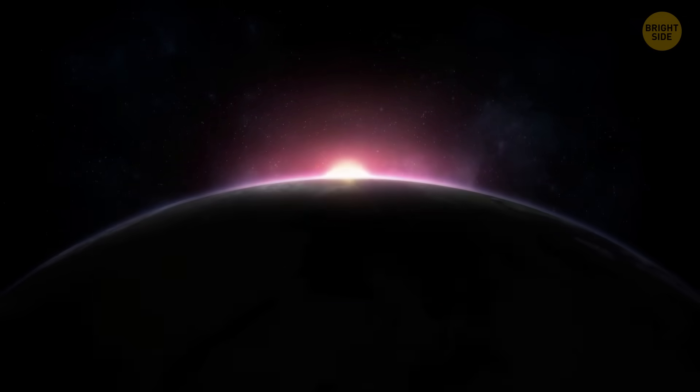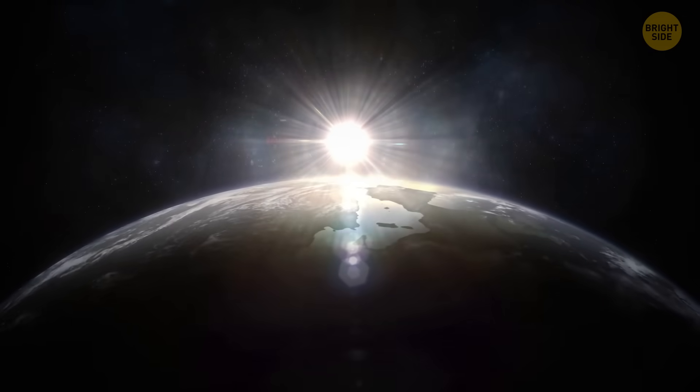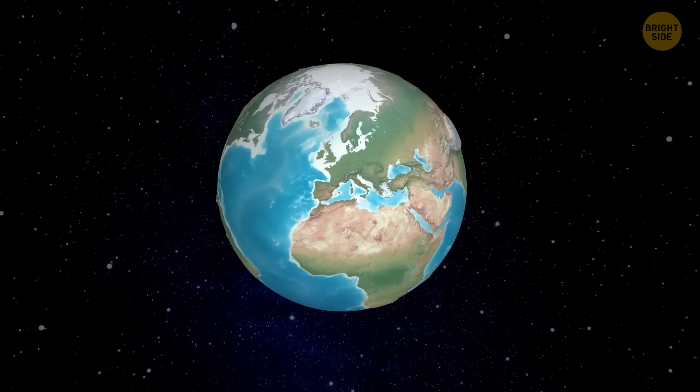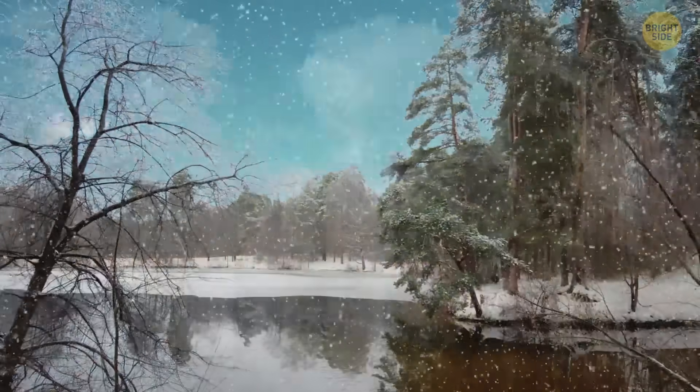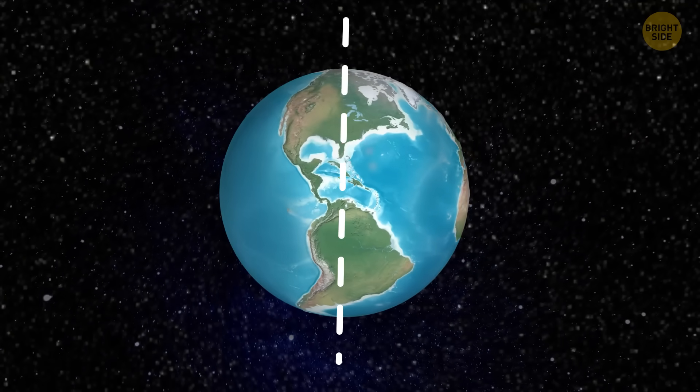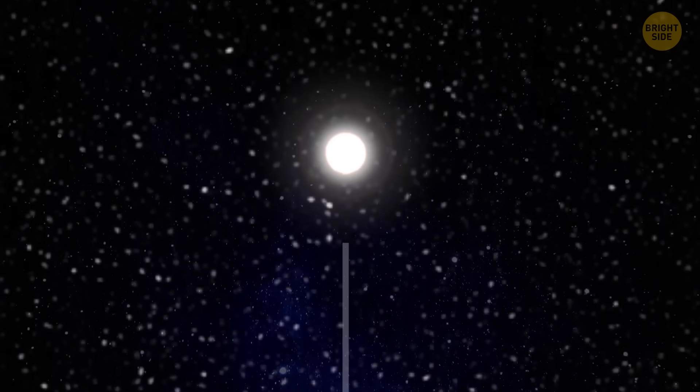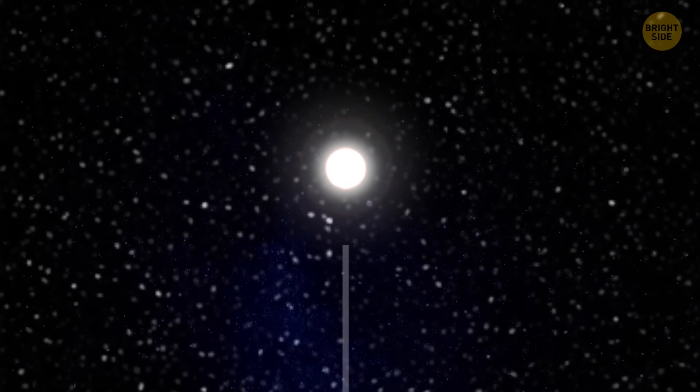Earth is spinning non-stop, which causes the sun to rise and set and stars to travel across the sky. Our planet is also tilted. That's why we have seasons. If we drew a line through the axis Earth spins around and extended it over 300 light-years past the north pole, at the end of that imaginary line, there would be the North Star.